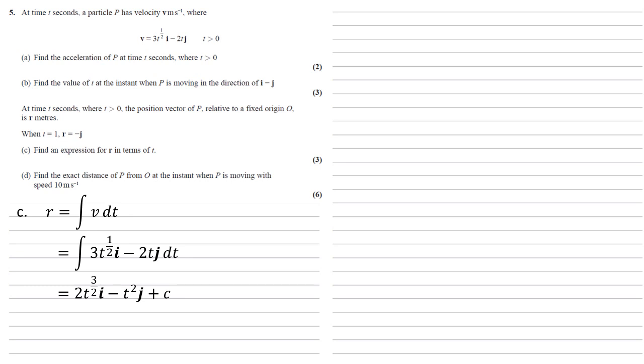To find this, we're going to use that second bit of information we've been given. So when t equals 1, r equals minus j. So at t equals 1, we're going to put that into our integral. So that becomes 2i minus j. We've still got the plus c on there, and this is all equal to the minus j that we've been given in the question. So both sides have got minus j on there, so c must be equal to minus 2i to cancel out the 2i that's there.